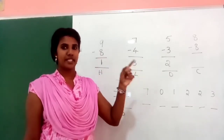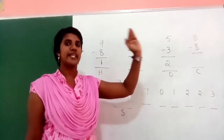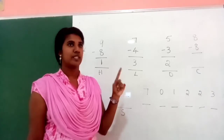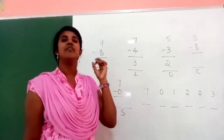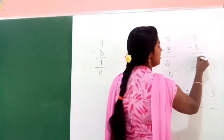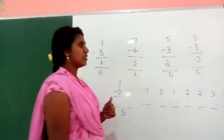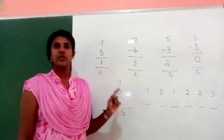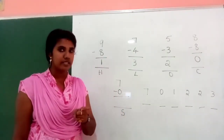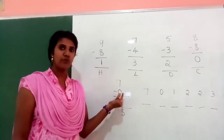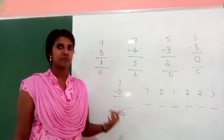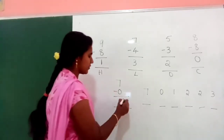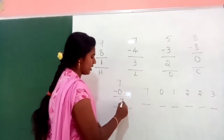Next: 8 minus 8. This is subtraction fact 2 — when we subtract a number from the same number, the answer will be 0. And next: 7 minus 0. This is subtraction fact 1 — when we subtract 0 from a number, the answer is the same number. So the answer is 7.